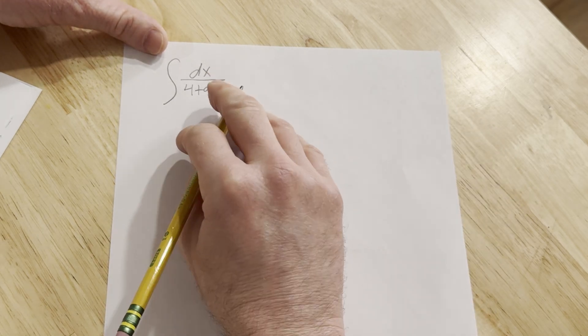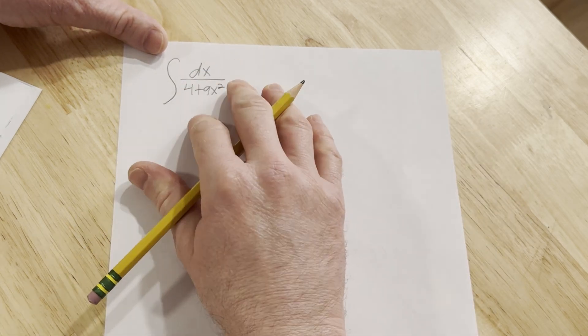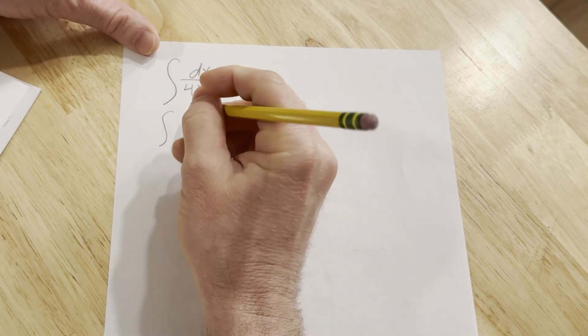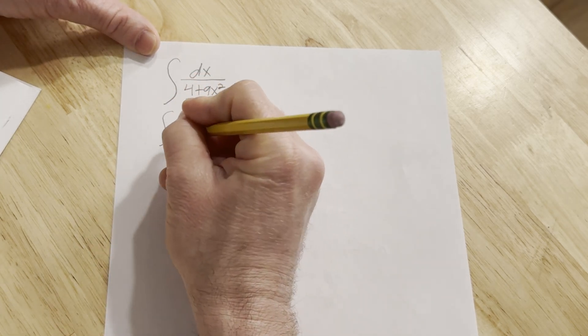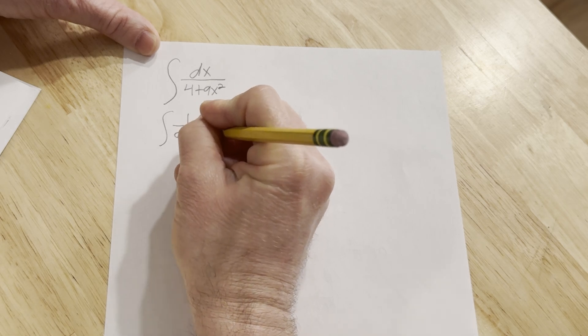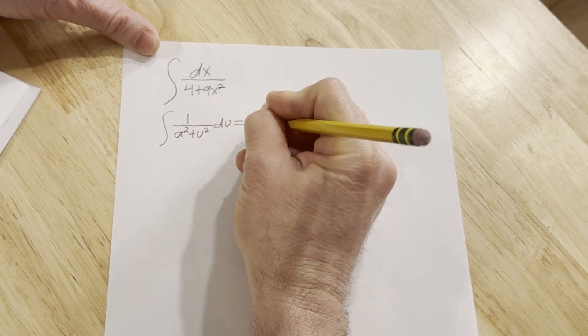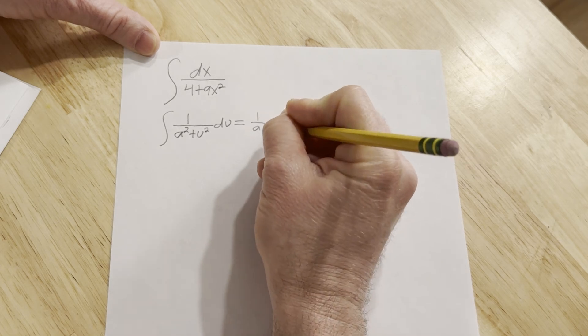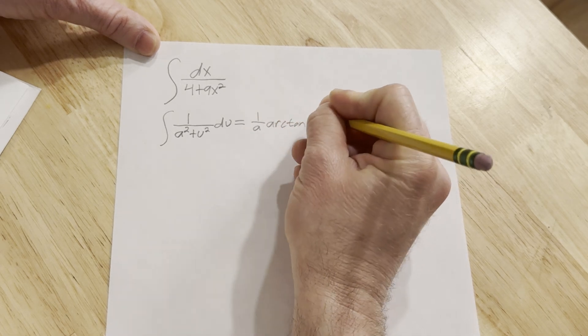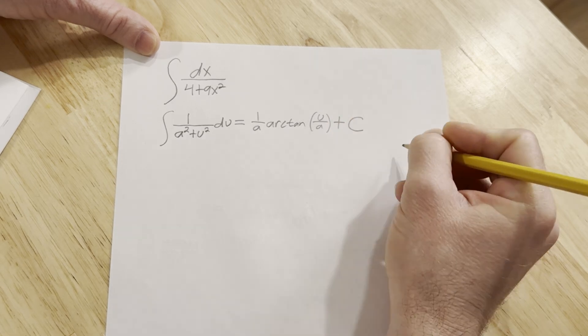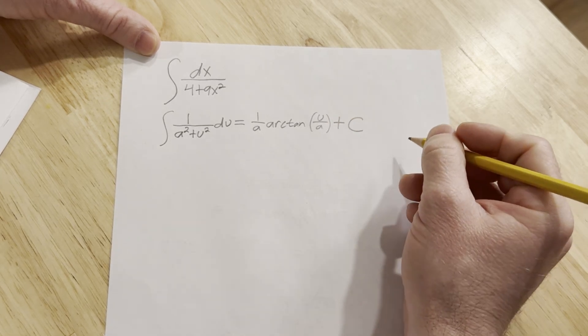So this problem is really about pattern recognition. There's a formula you can use and apply to this problem. The formula says if you have the integral of 1 over a squared plus u squared du, this is equal to 1 over a times the arctangent of u over a plus capital C, which is our arbitrary constant of integration.